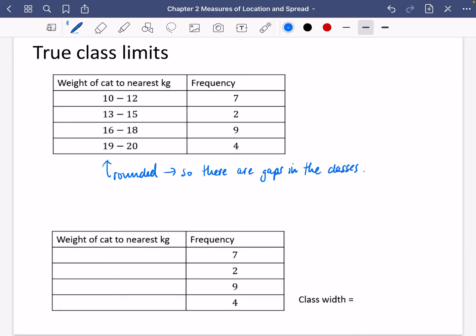What I mean by that is where do you put 12.2 kilograms? Well, yeah, we know it's probably going to go inside this group because it looks like it would round to 12 kilograms, but it's not obvious. So if they've been rounded, I think we need to be a little bit more specific about writing them as their true class limits.